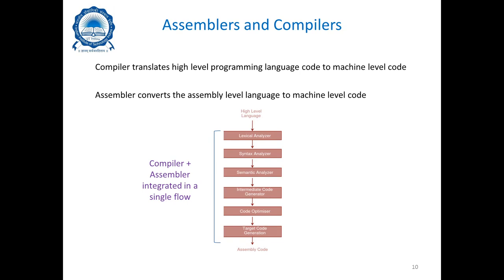Compilers are responsible for translating high-level programming language code to machine-level code, whereas an assembler converts assembly language to machine language code. Both can be integrated in a single flow: starting with the high-level language, passing through analyzers such as lexical, syntax, semantic, intermediate code generator, code optimizer, and target code generation to produce assembly code. This assembly code is then fed into the MIPS processor as machine code to produce the output.